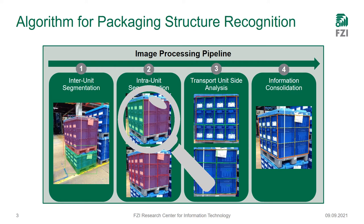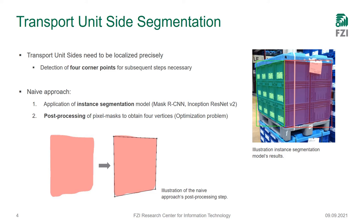For the topic of TETRAPACnet, I want to focus on the transport unit site segmentation. Transport unit site segmentation means we need to find the two visible transport unit sides of the transport unit. Importantly, it is not sufficient to find the bounding box or a rough instance segmentation mask of the side, but we need to find the four precise corner locations to perform the subsequent image rectification.